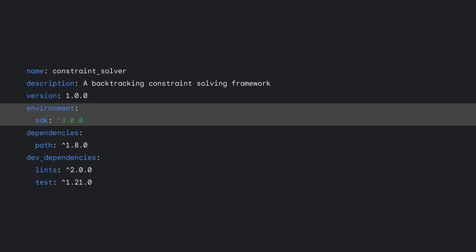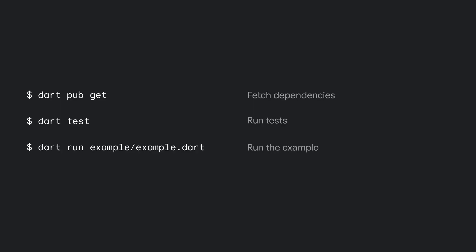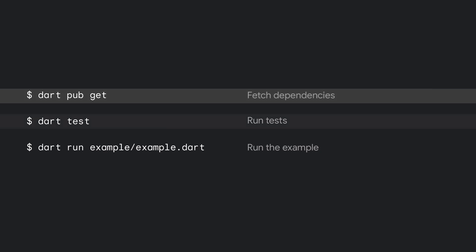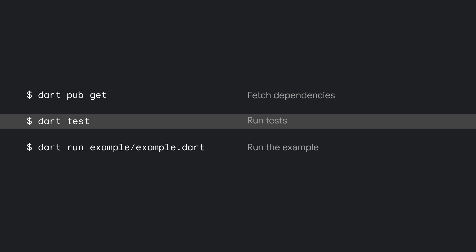If you're using Dart 3 features such as patterns or records, set the minimum SDK version so that developers that depend on your package will only get this version when using the Dart 3 SDK. Once everything is configured, run dart pub get to fetch the dependencies in your pubspec. To verify that your package is working, make sure to write some tests and run them using the dart test command or run the example.